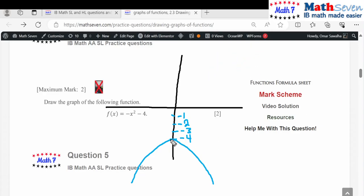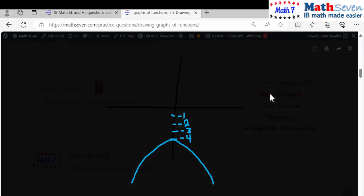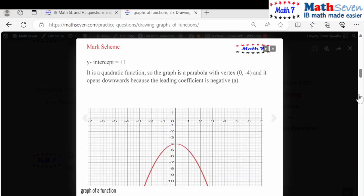So this is the smooth edges and this is the graph of your parabola. Take a look at the mark scheme, you'll see it's the same answer. It's a quadratic function, so the graph is a parabola with vertex (0, -4), and it opens down because the leading coefficient is negative.